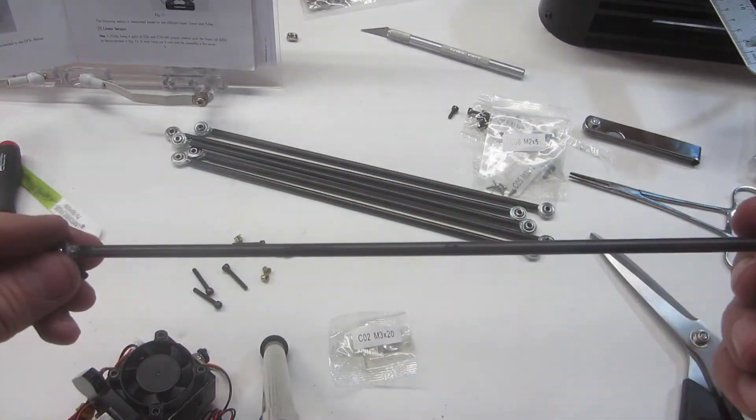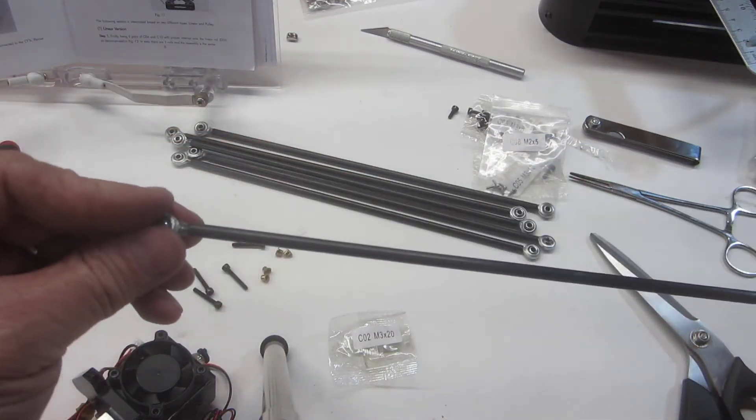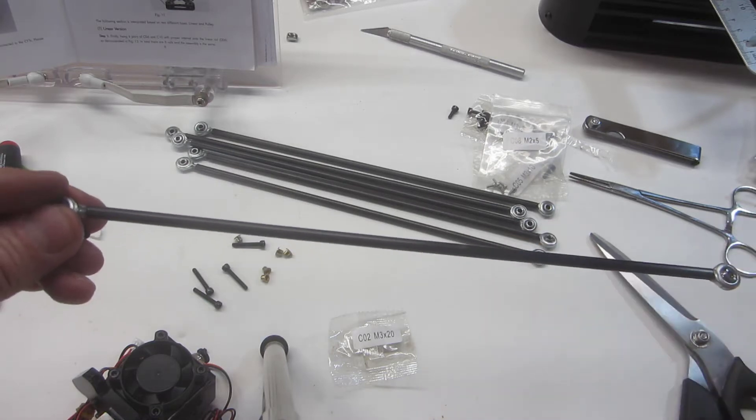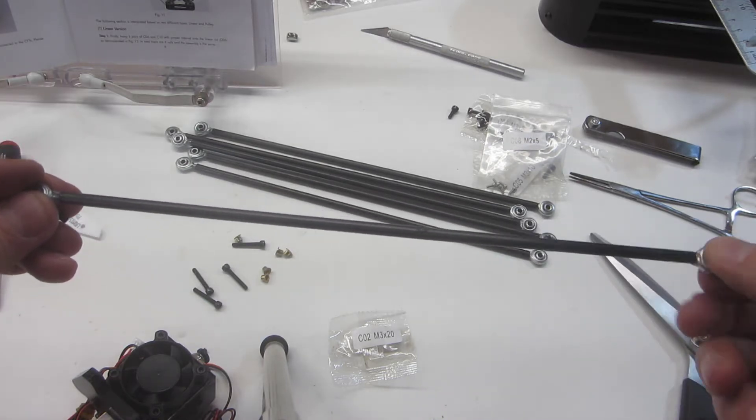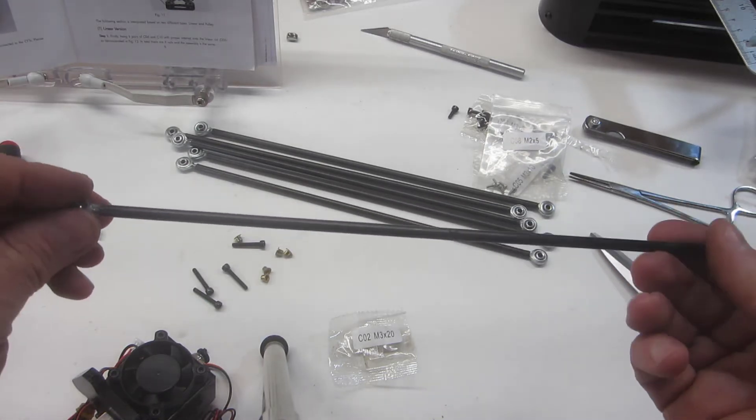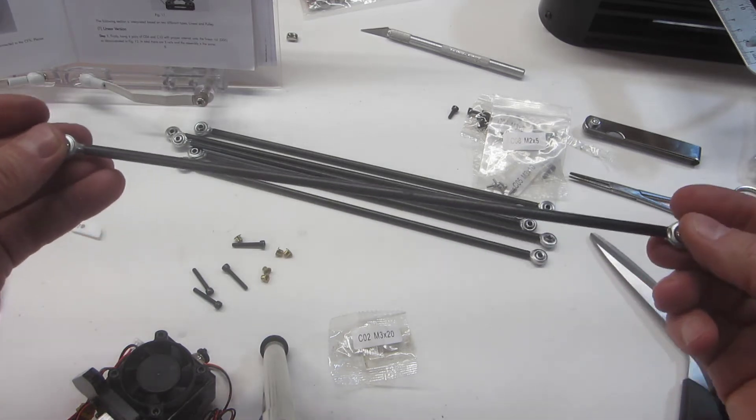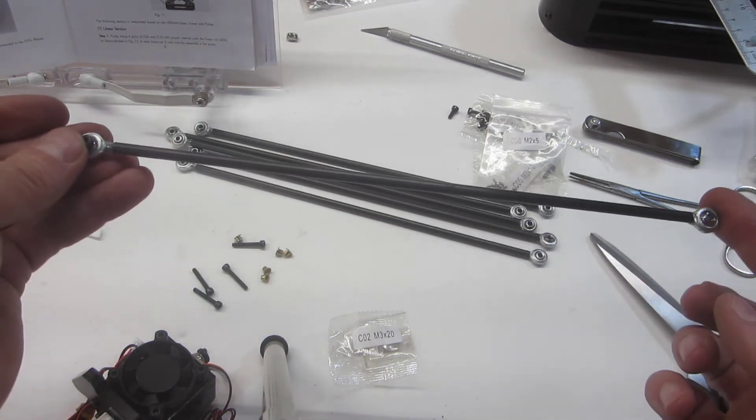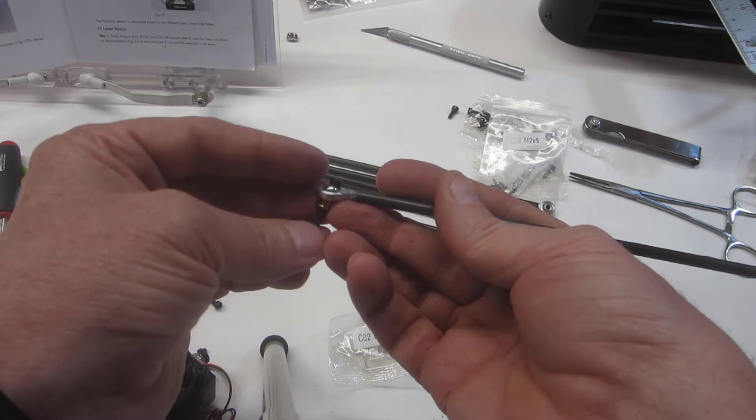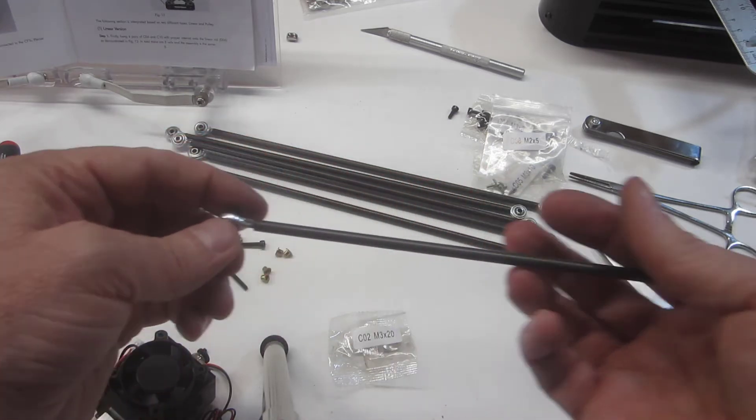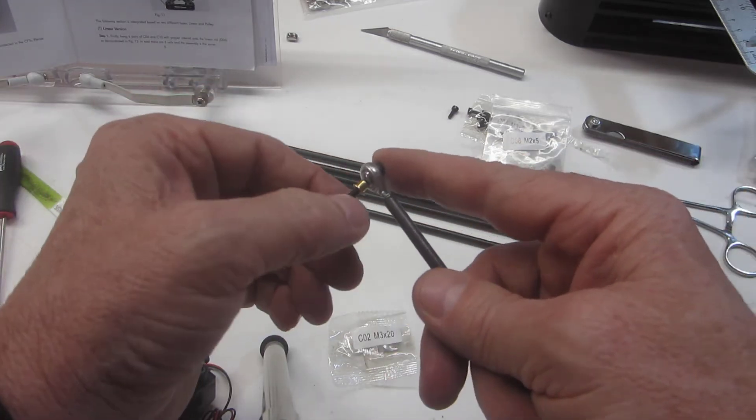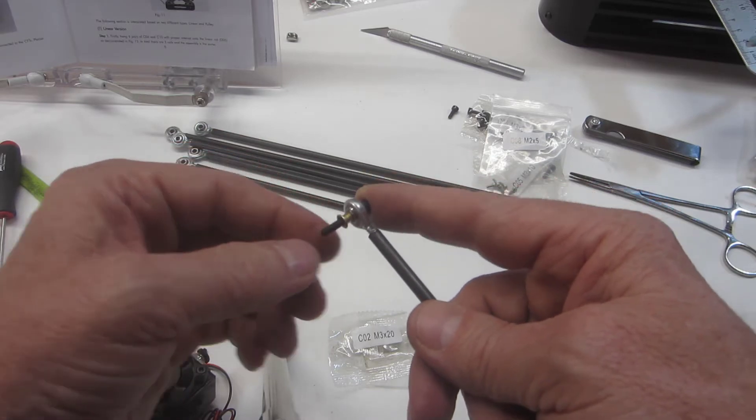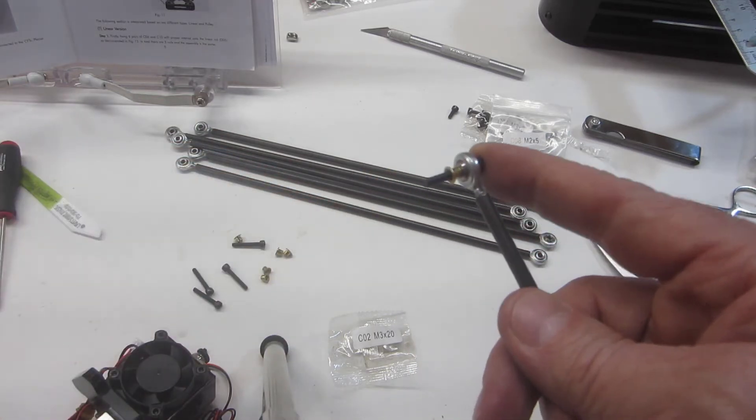I did measure them. I thought, boy, it wouldn't be good if these weren't all the same length. But I did line them up, and I assume that what they must do is stick these rod ends on some kind of a jig to make sure that every single one is exactly the same length. Anyway, they are all really close. They're within one or two thousandths of each other in length, so I'm not worried about that.